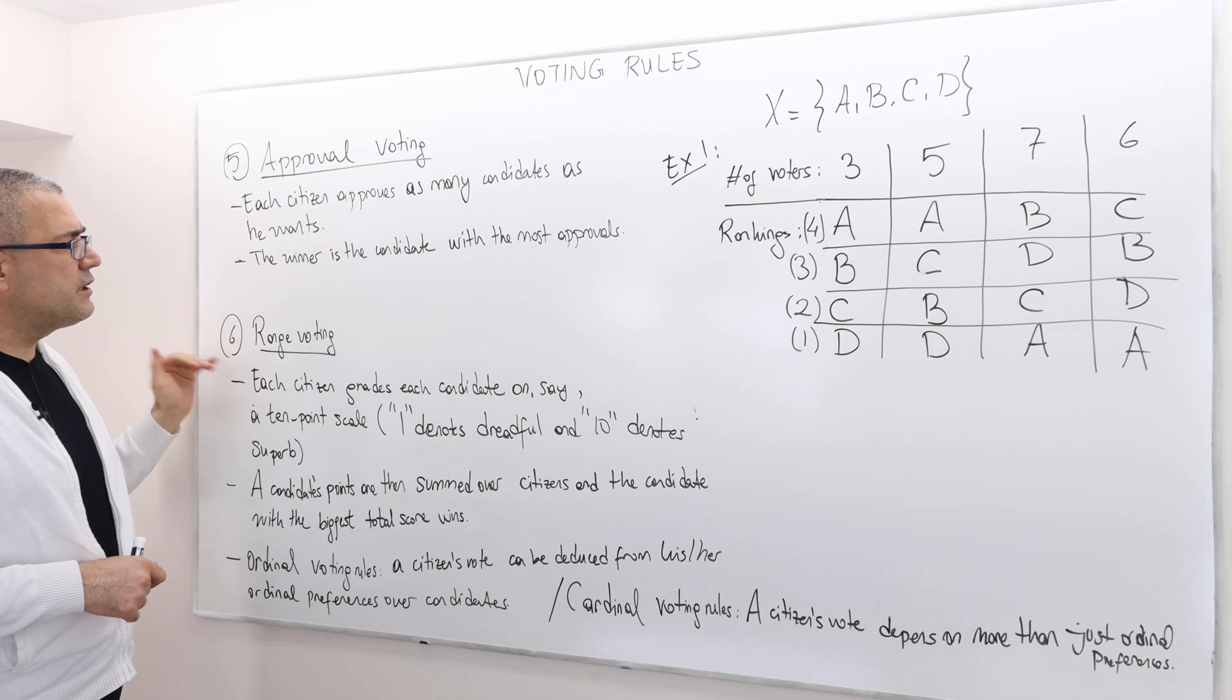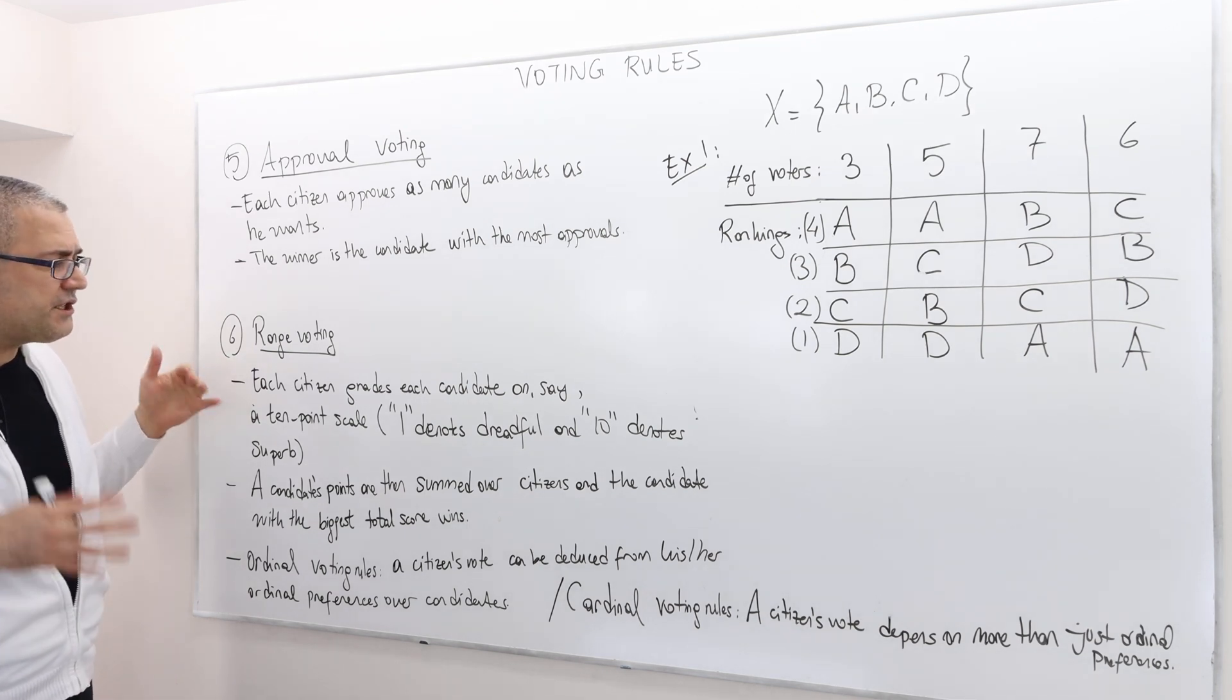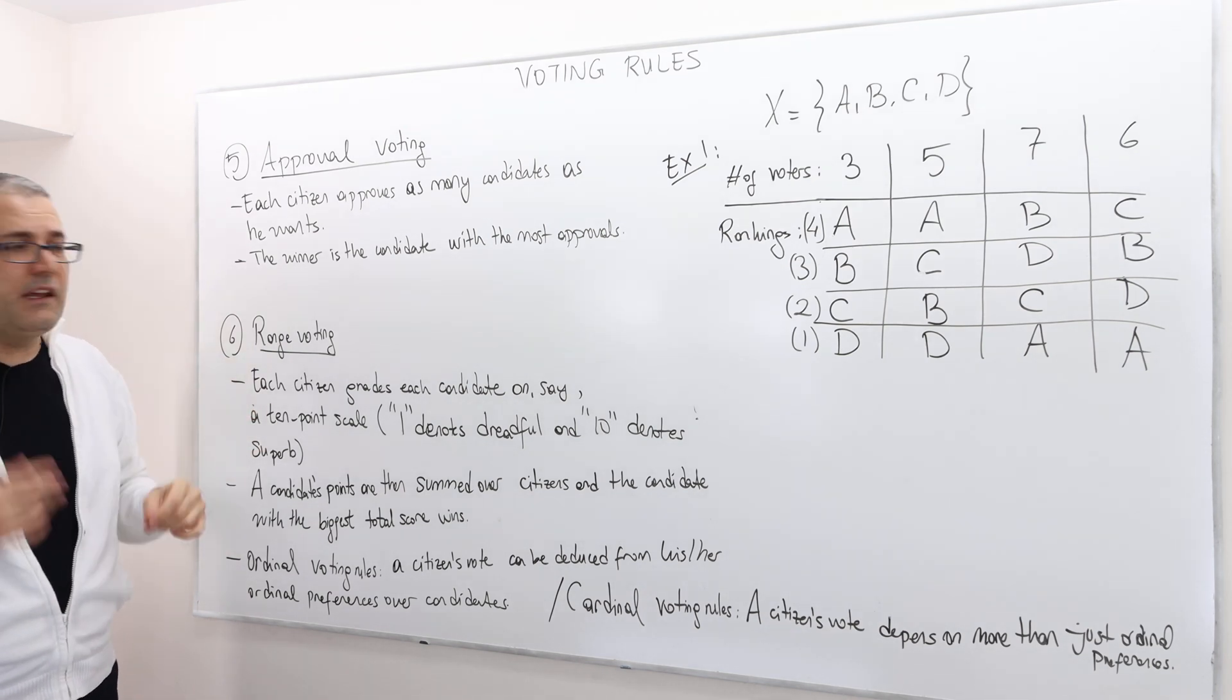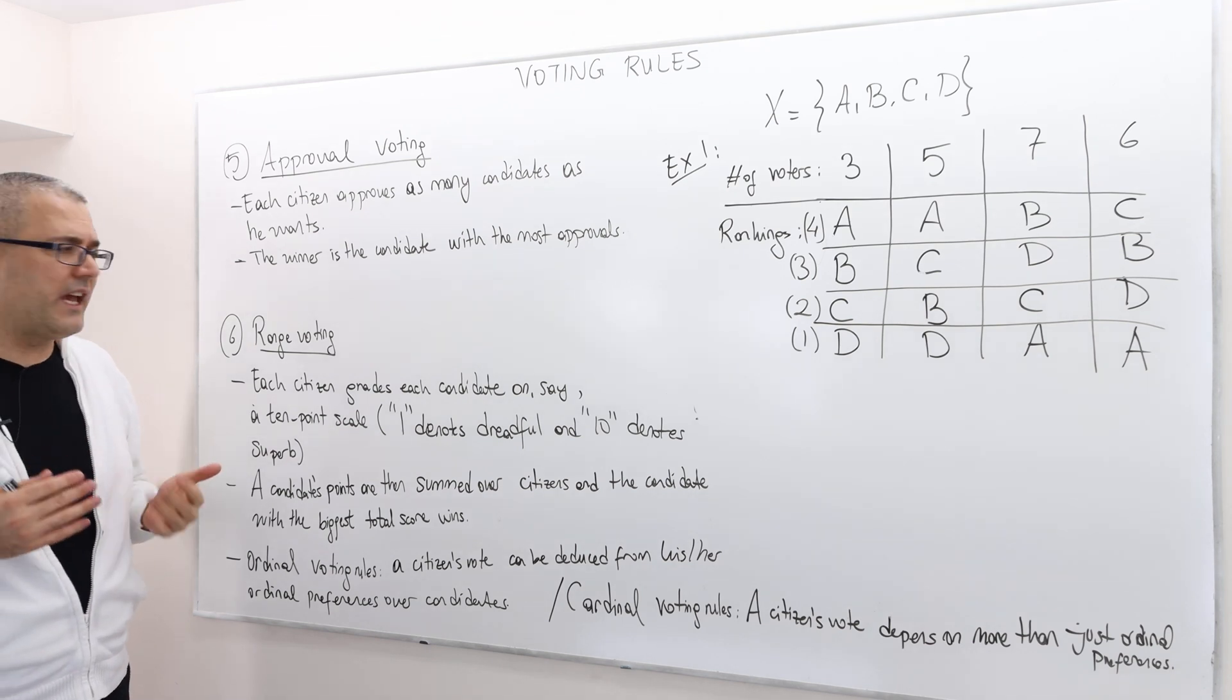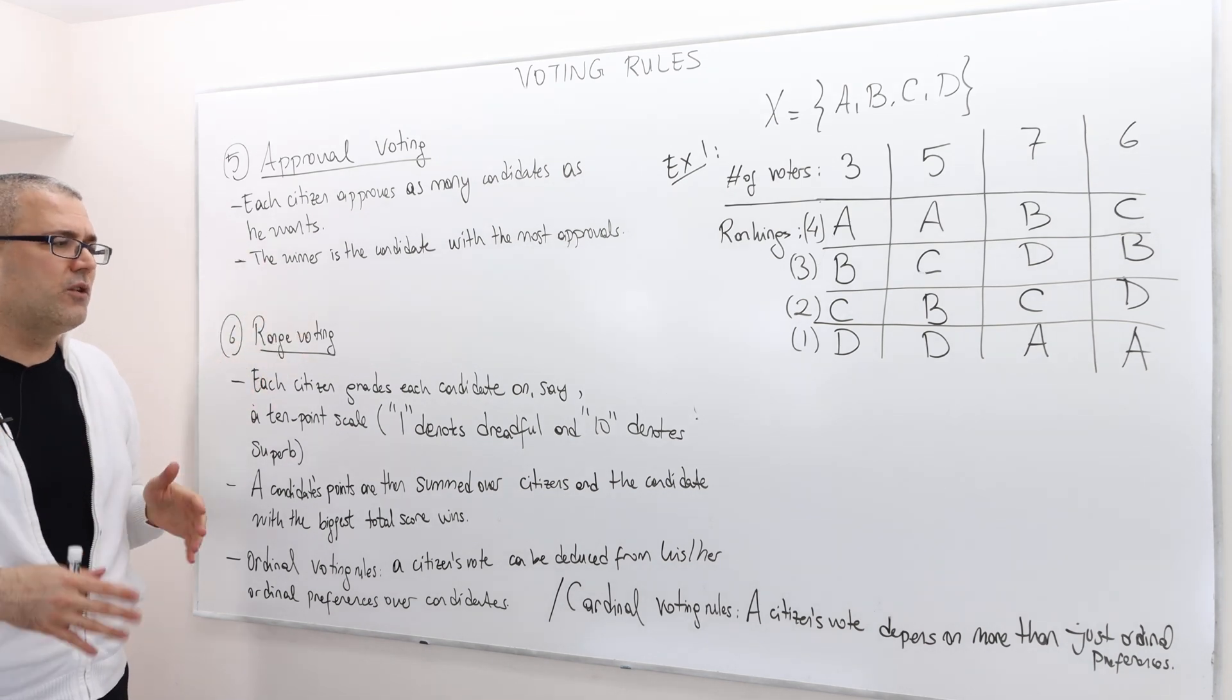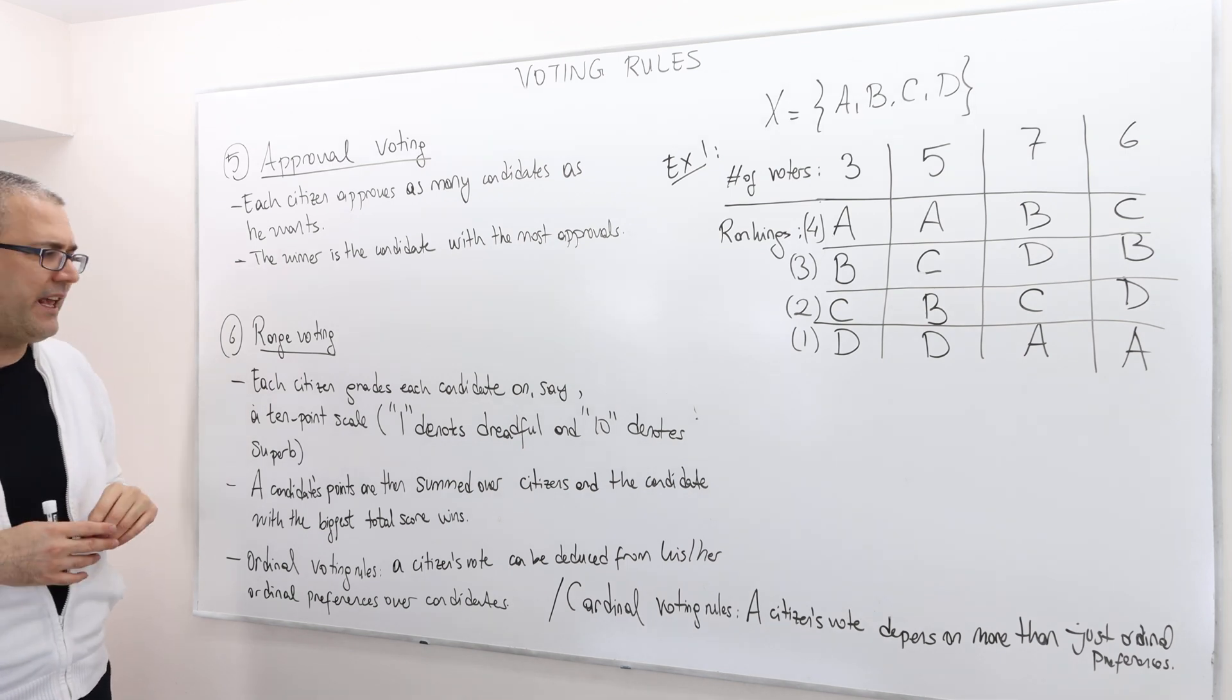We need more than that. Well, in the range voting, each citizen grades each candidate on, say, for example, a 10 point scale. 1 denotes dreadful, 10 denotes wonderful, superb candidate.